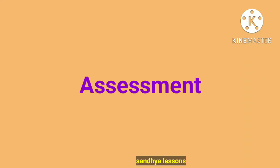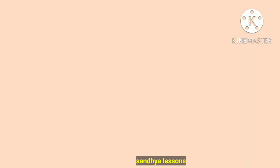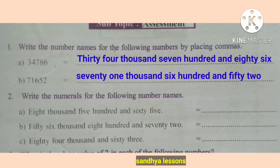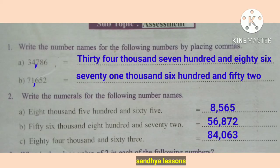Assessments. First question: write the number names for the following numbers by placing commas — 34,786 and 71,652. Second question: write the numerals for the following number names — eight thousand five hundred and sixty-five; fifty-six thousand eight hundred seventy-two; eighty-four thousand sixty-three.